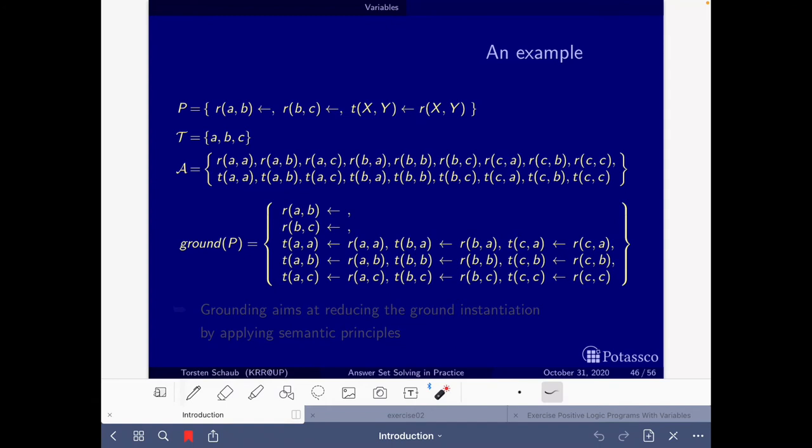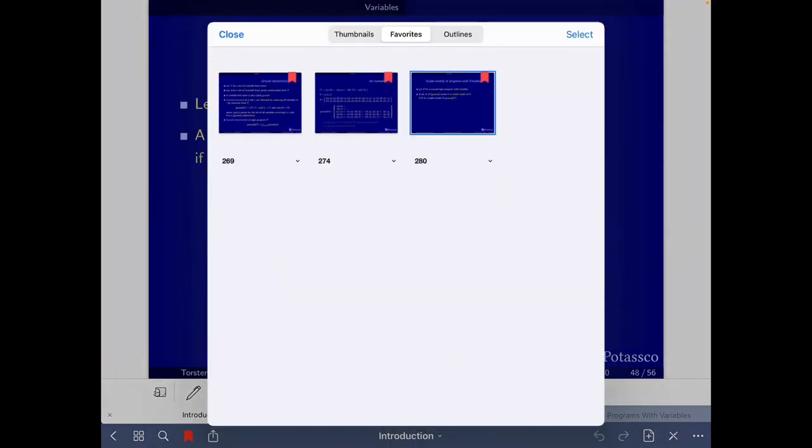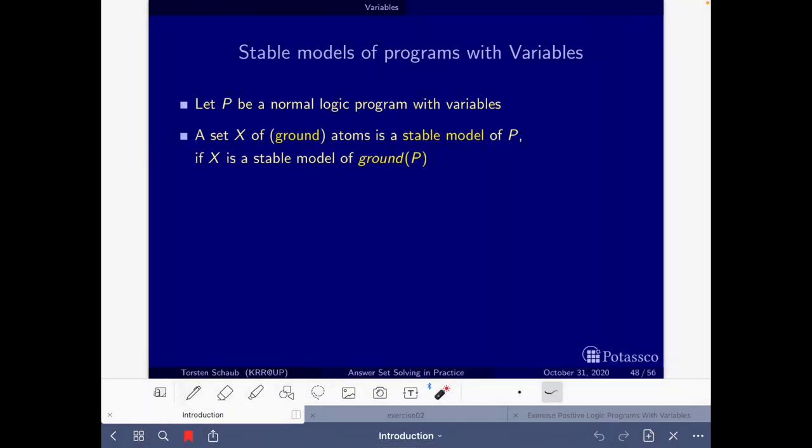And what is left now is to find a place where it says what is a stable model of a logic program with variables. And this we have it here in slide 48, where it says that letting P be a normal logic program with variables, a set X of ground atoms is a stable model of P, if X is a stable model of the ground instantiation of P.